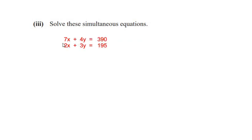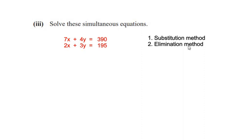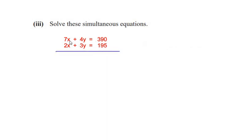Part 3: solve these simultaneous equations. The first equation is 7x plus 4y equals 390, and the second equation is 2x plus 3y equals 195. There are two ways of solving simultaneous equations: the substitution method and the elimination method. I am going to use the elimination method. We multiply the first equation by the coefficient of x from the second equation, which is 2, and multiply the second equation by the coefficient of x from the first equation, which is 7.